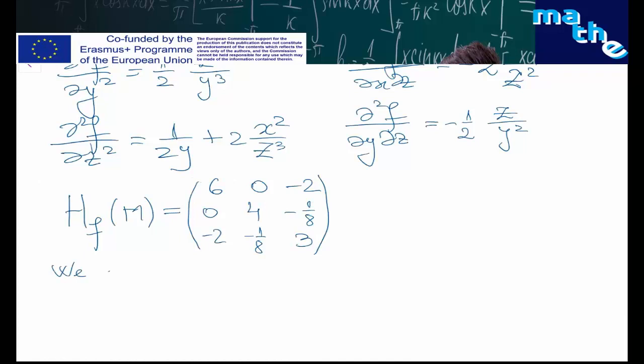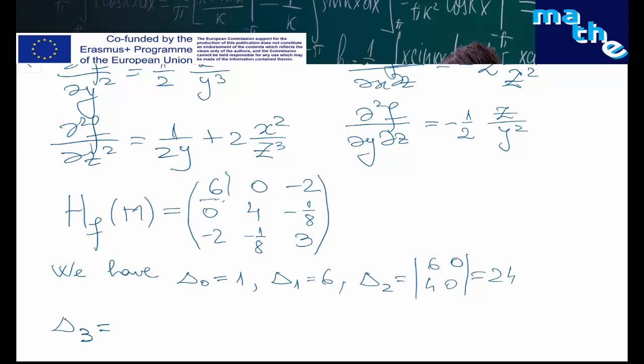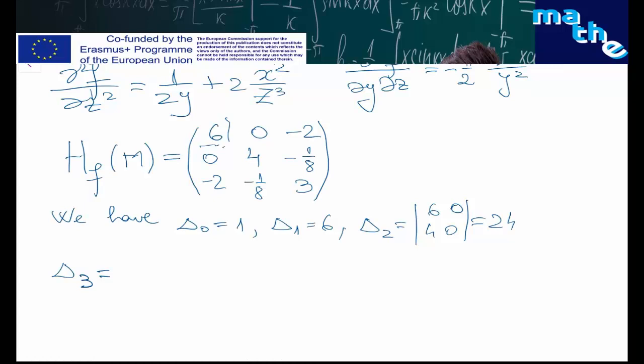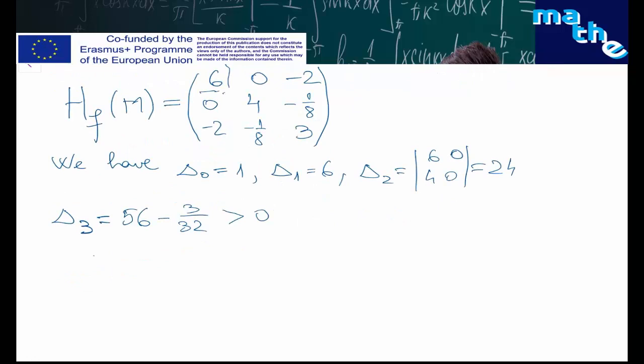We compute the leading principal minors: δ₀ = 1 by definition; δ₁ = 6; δ₂ = det[[6, 0],[0, 4]] = 24; and δ₃, the determinant of the full Hessian matrix, equals 56 − 3/32, which is a positive number. So we obtain δ₀ > 0, δ₁ > 0, δ₂ > 0, and δ₃ > 0.